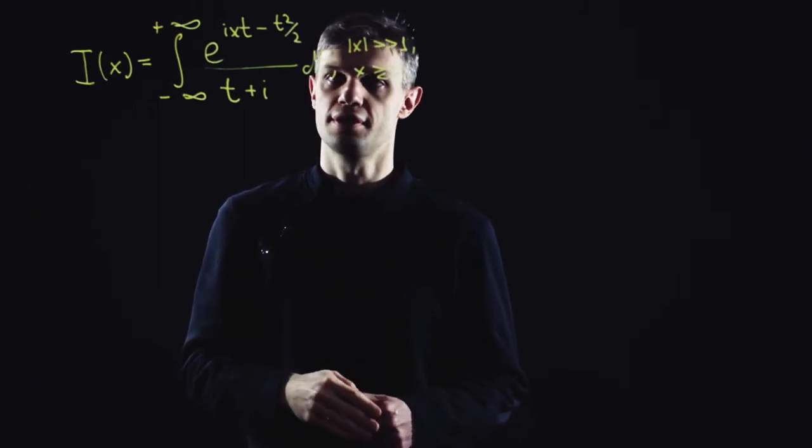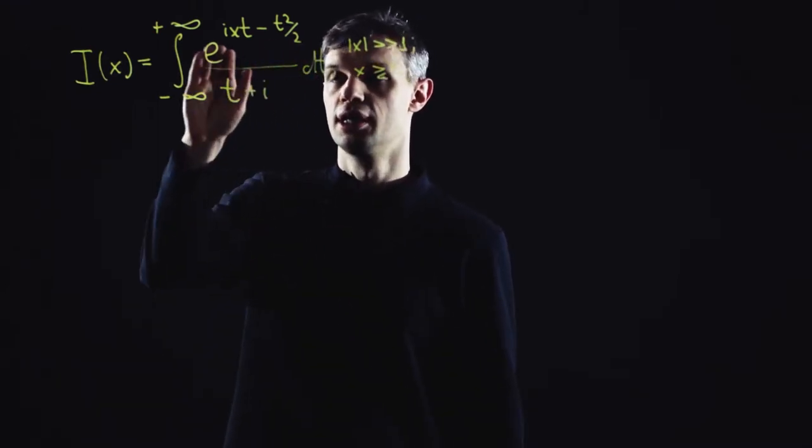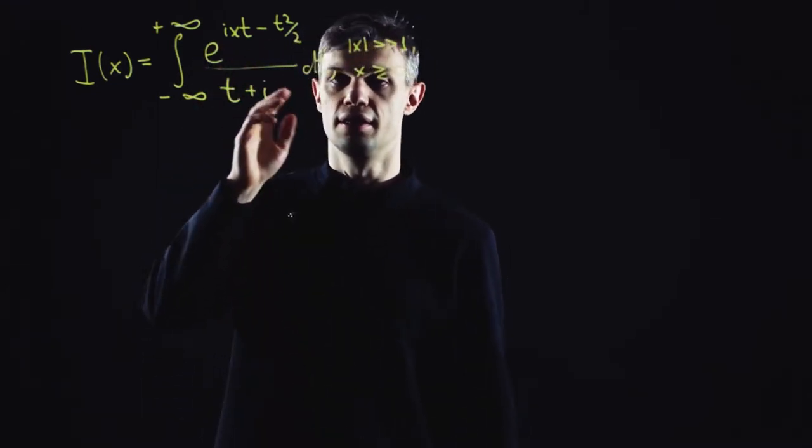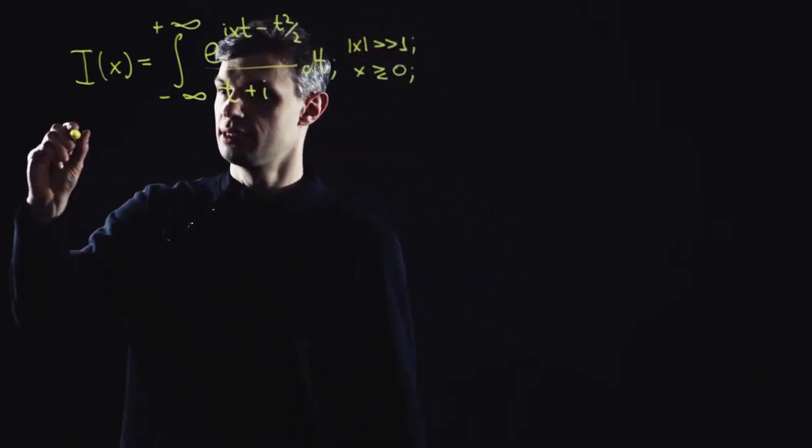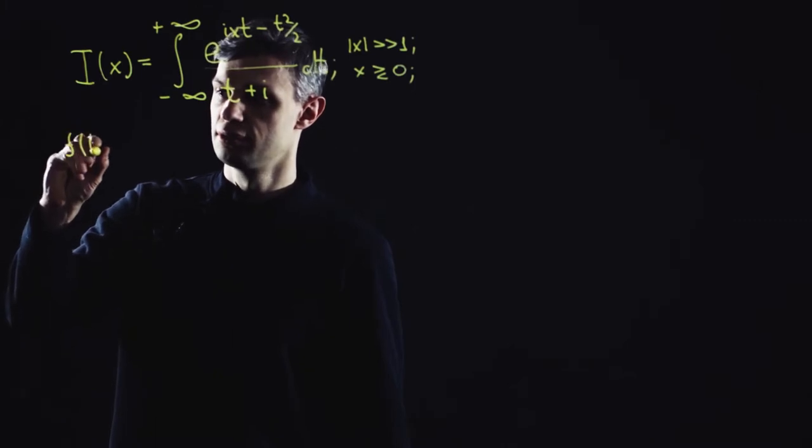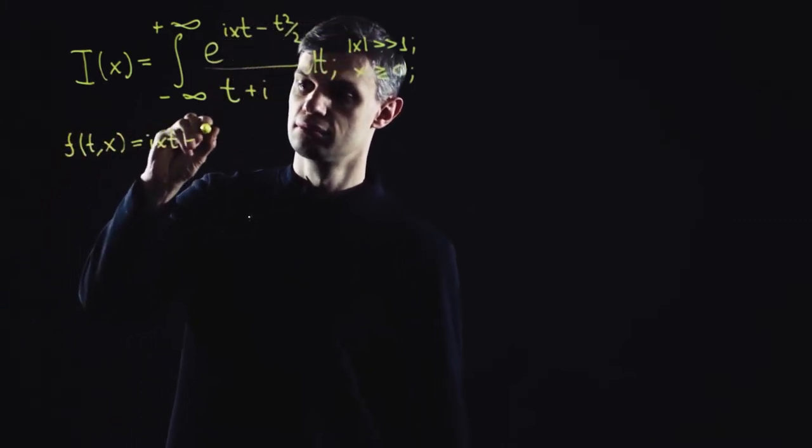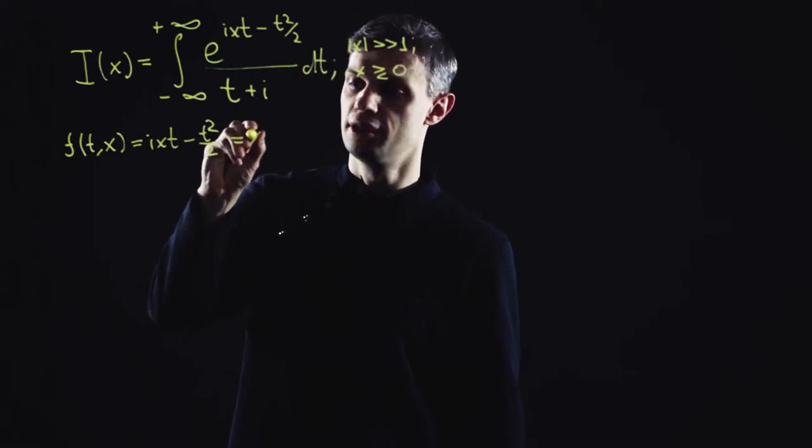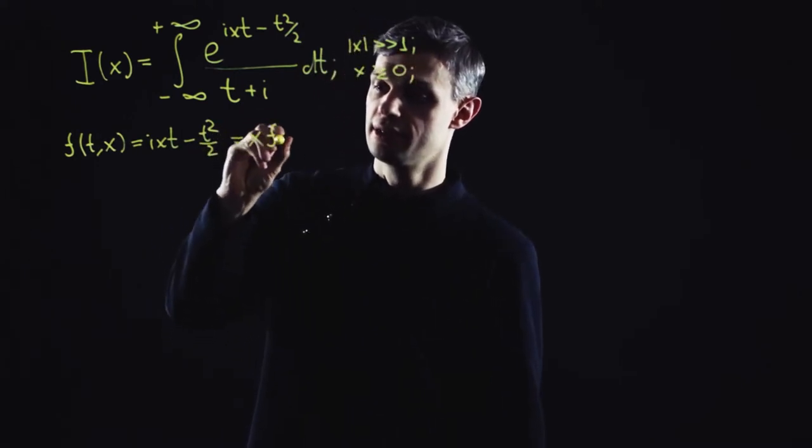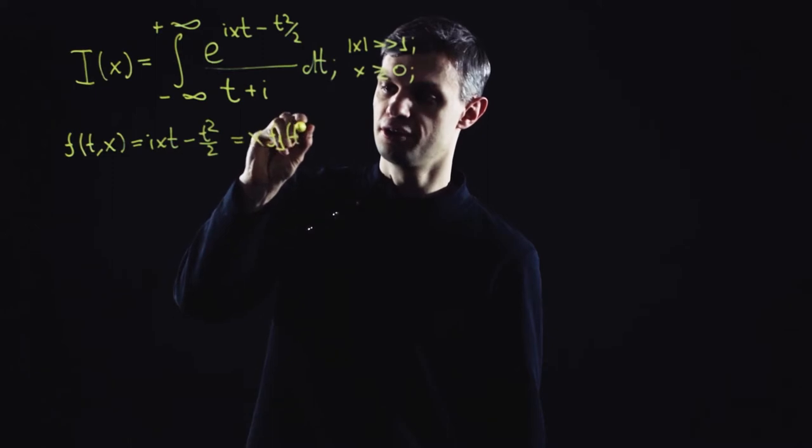The first thing you notice is that your exponent function doesn't contain large variable x in a homogeneous way. Meaning that the exponent function can't be split into the product of our large parameter and additional function of t variable only.